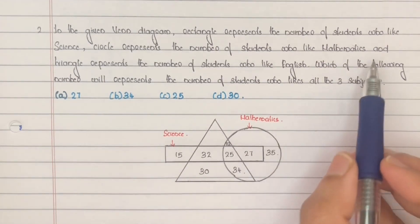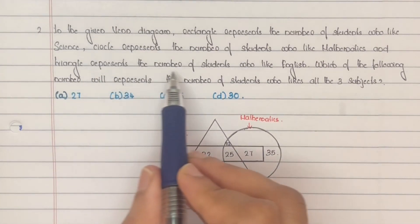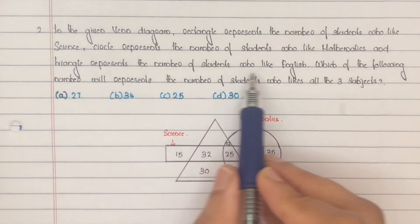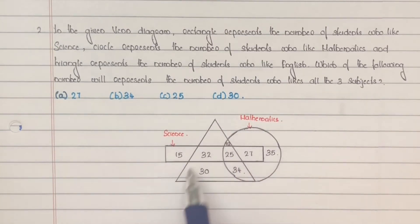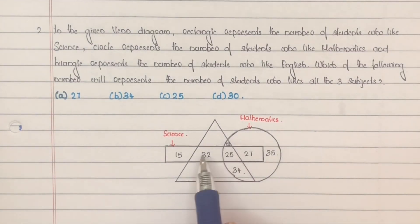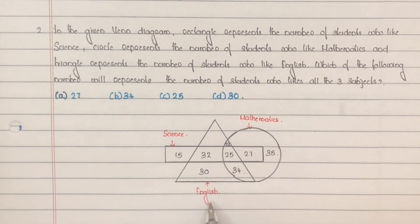Next, the triangle represents the number of students who like English. The triangular portion includes 22 plus 32 plus 25 plus 30 plus 34 students who like English.